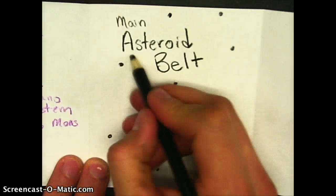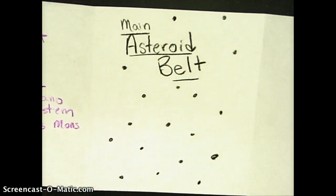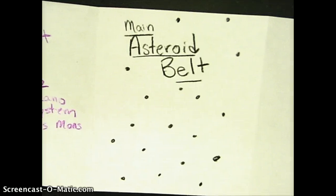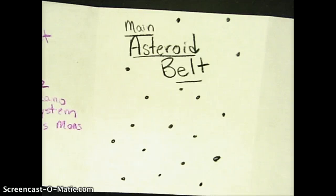The best theory for why the asteroid belt exists is that protoplanets — smaller planets orbiting the Sun — rather than smashing together and creating one large planet, had so much energy when they collided that they actually ripped each other apart into these smaller rocky objects. So that's it for tonight.